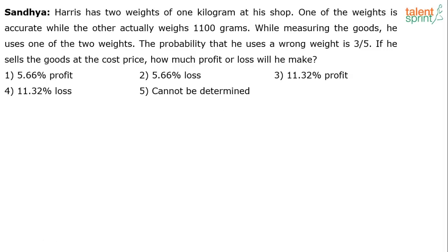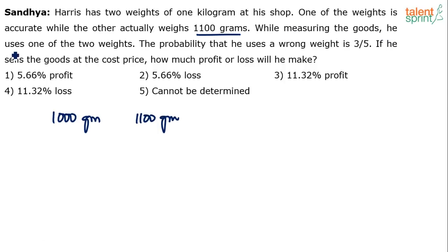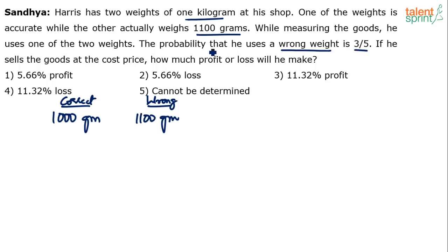A very interesting one posted by Sandhya. Let's reread the question and understand the important points. Harris has two weights: one accurate at 1000 grams, and one wrong weight at 1100 grams. He randomly picks one and measures the goods. The wrong weight is the 1100 gram one. The probability that he uses the wrong weight is 3 by 5, so the probability he uses the correct weight is 2 by 5.